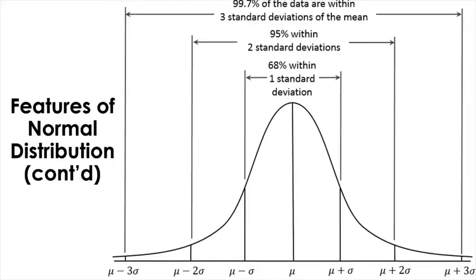Another important feature of normal distribution is what's called the 68-95-99.7 rule, which relates the area or proportion under a normal distribution to the standard deviation. This rule applies to any normal distribution. According to this rule, the area under the curve bound by plus or minus one standard deviation — where mu represents the mean of the distribution and sigma is the standard deviation.